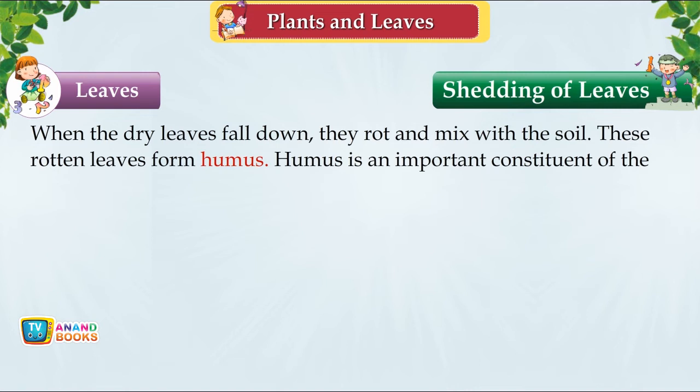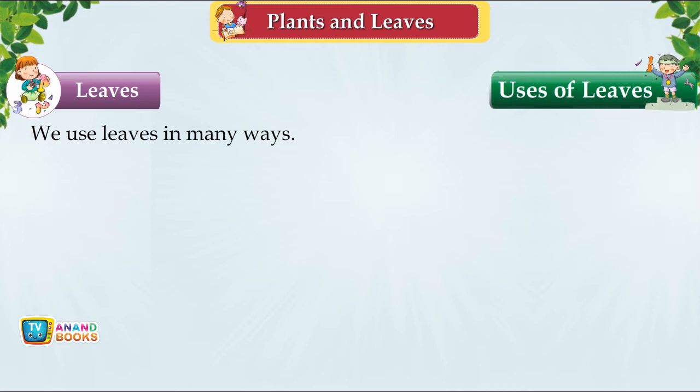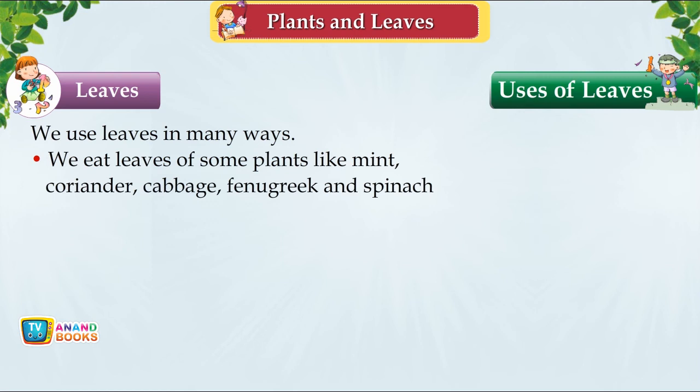Uses of Leaves. We use leaves in many ways — we eat the leaves of plants like mint, coriander, cabbage, fenugreek and spinach as vegetables.